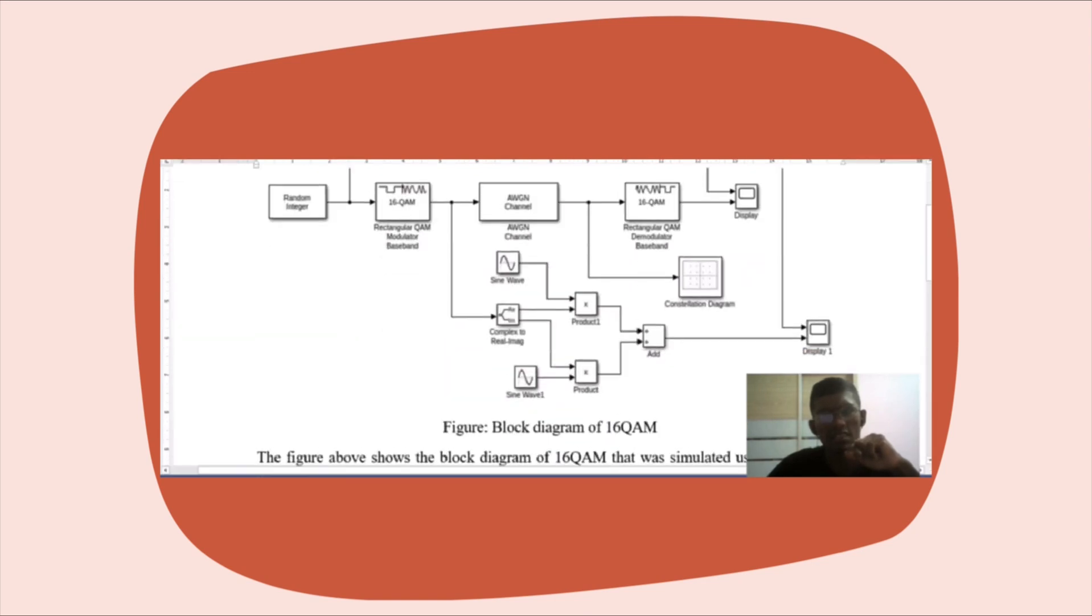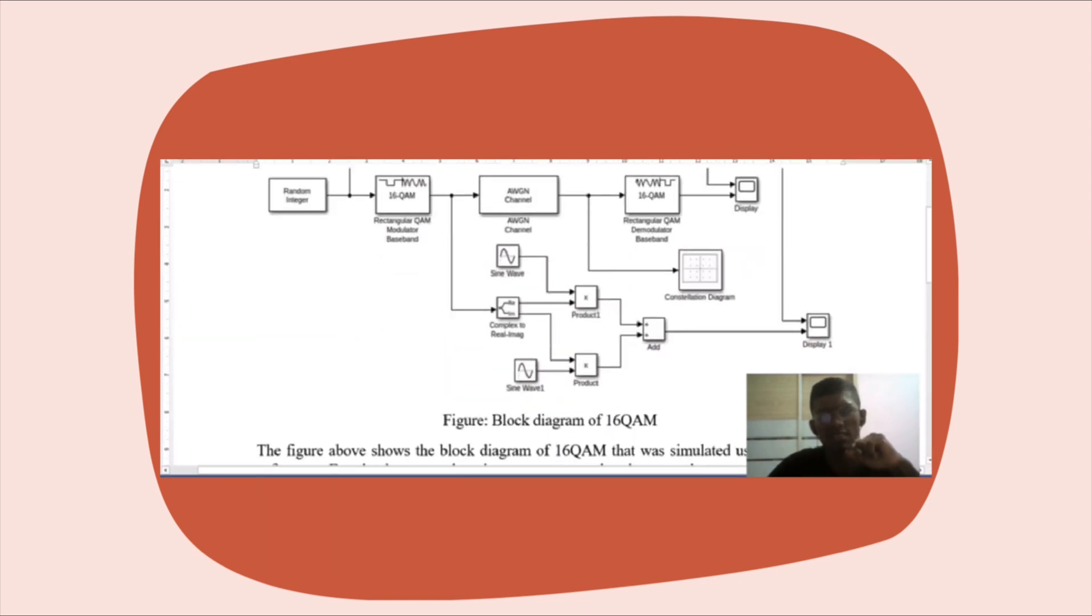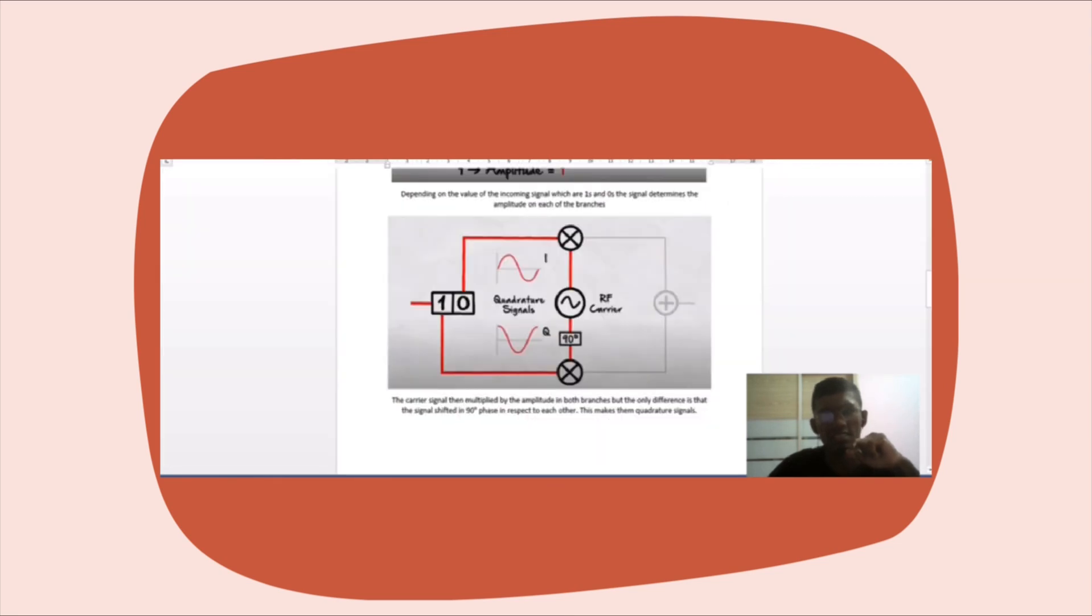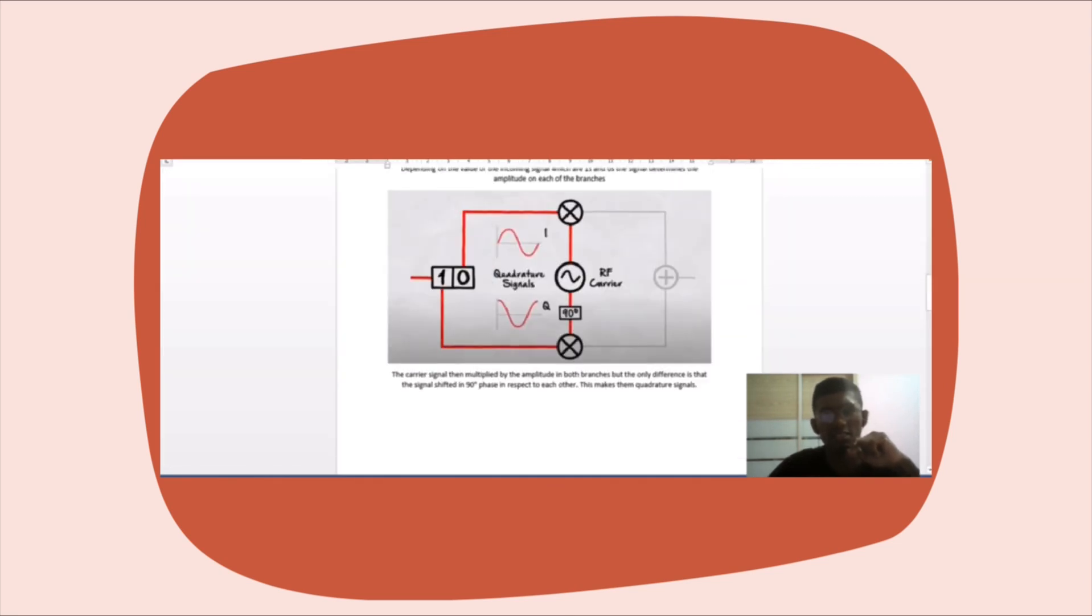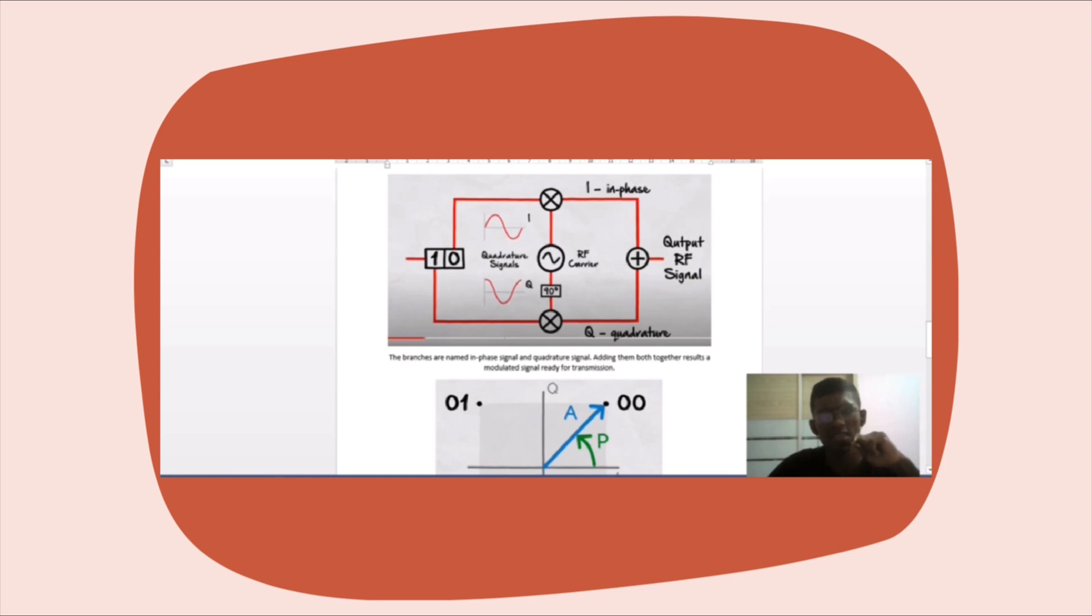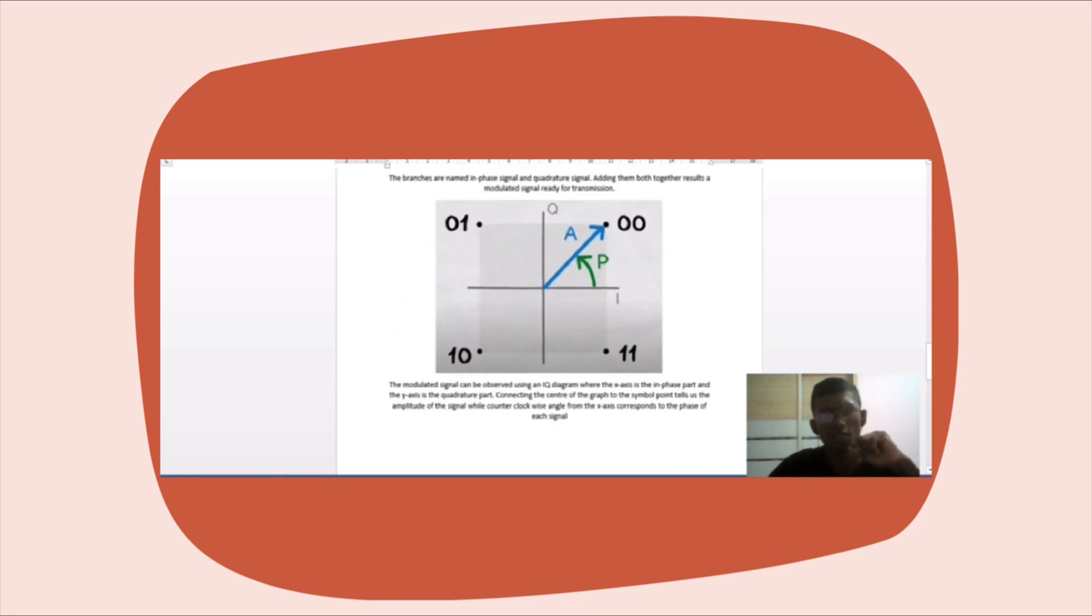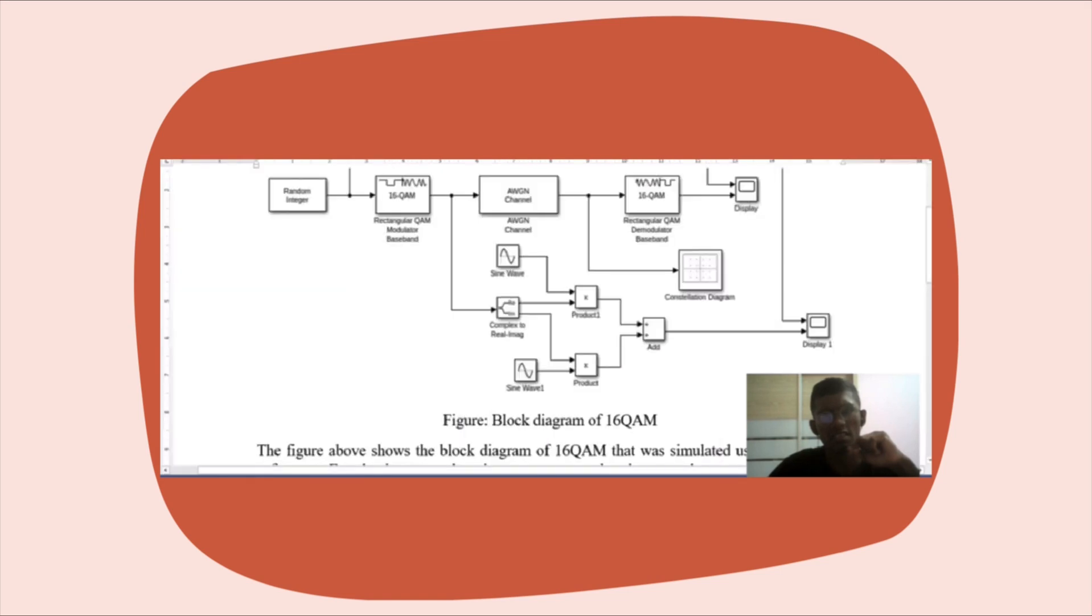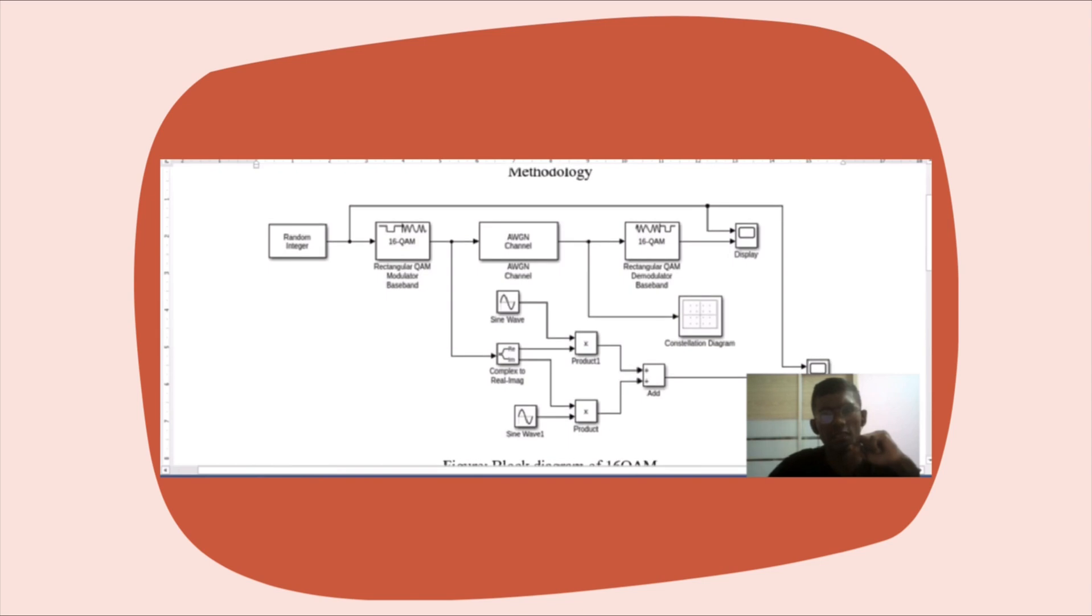But the only difference is they are shifted 90 degrees in phase from each other. This makes them quadrature signals. As you can see here, the signals are multiplied and then added together. The branches which are separated are called in-phase signal and quadrature signal. Adding them both together results in a modulated signal ready for transmission. The modulated signal can be transmitted to a transmission channel.